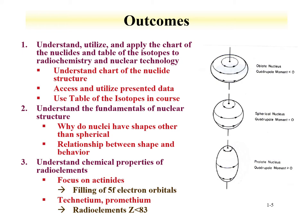The course has seven outcomes where, at the end of the quarter, the student should have expertise, experience, and knowledge in topics related to radiochemistry. The first outcome is to understand, utilize, and apply the chart of the nuclides and the table of the isotopes to radiochemistry and nuclear technology — primarily understanding how to obtain and utilize the data presented in those documents. Students should also understand the structure of the nucleus; often in chemistry we ignore the nucleus, but within this course we investigate that the nucleus has structure, including oblate, spherical, and prolate nuclei.